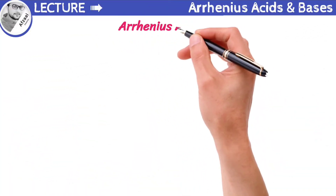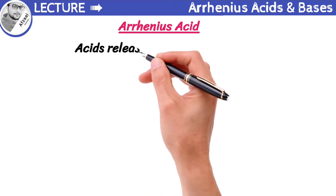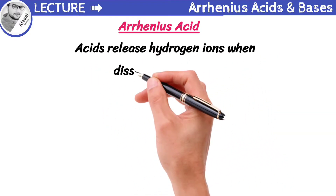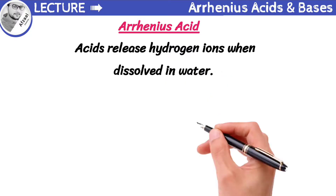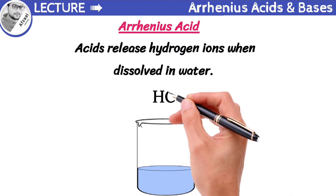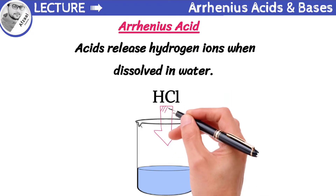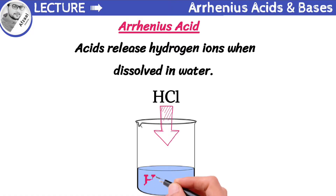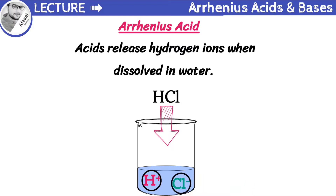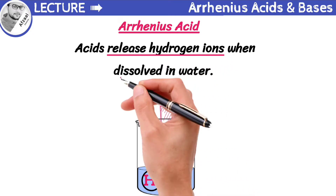Let me explain the concept with examples. According to this concept, acids are substances that release hydrogen ions when dissolved in water. Let's apply this to HCl. Hydrochloric acid is a compound made up of hydrogen and chlorine atoms. When we dissolve HCl in water, it breaks down into its components — hydrogen ions and chloride ions. This means that HCl is an acid because it has the ability to release hydrogen ions when dissolved in water.